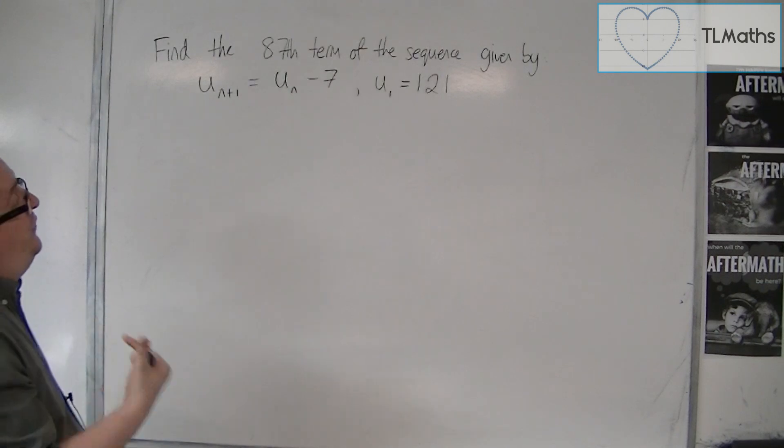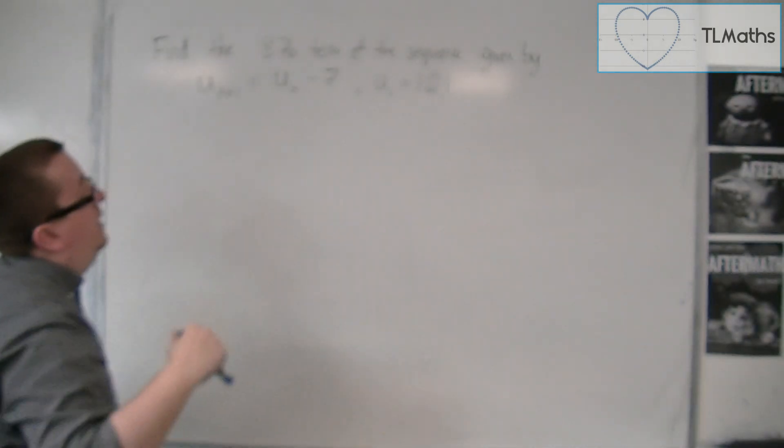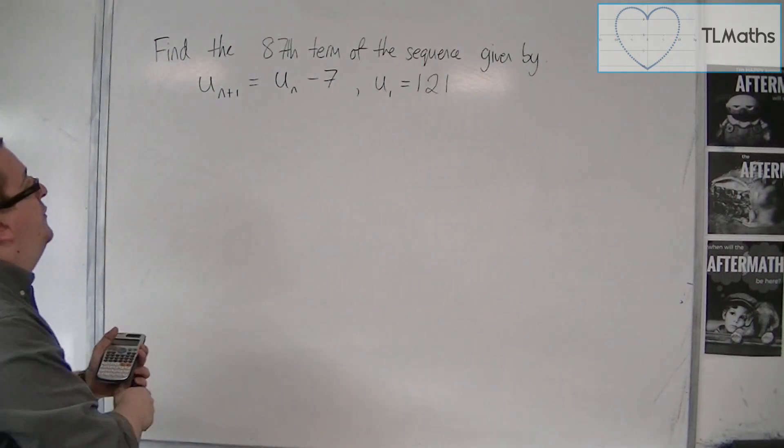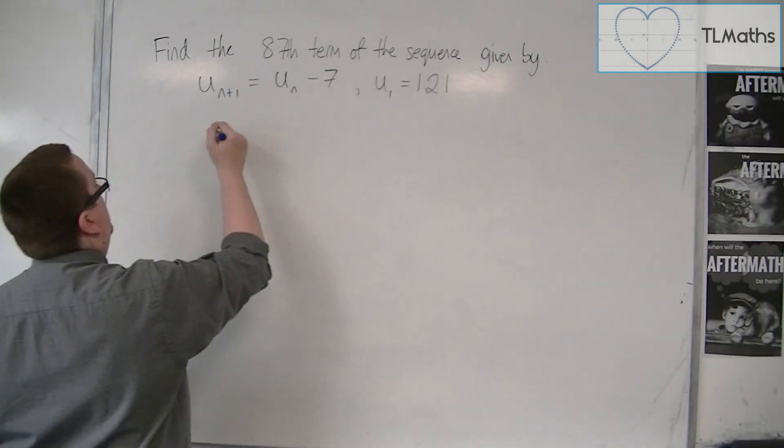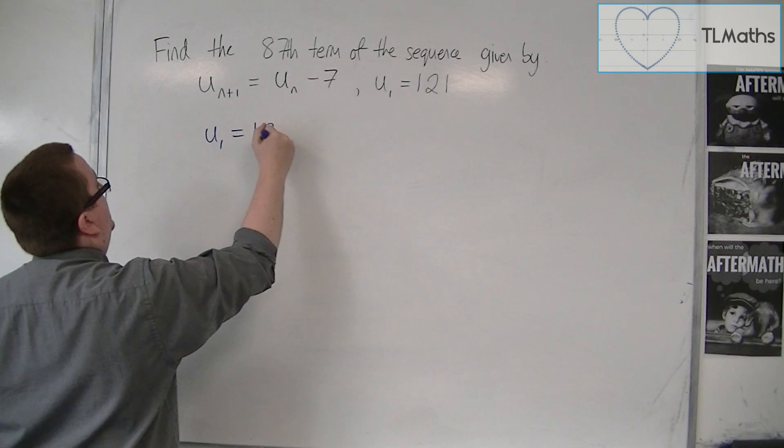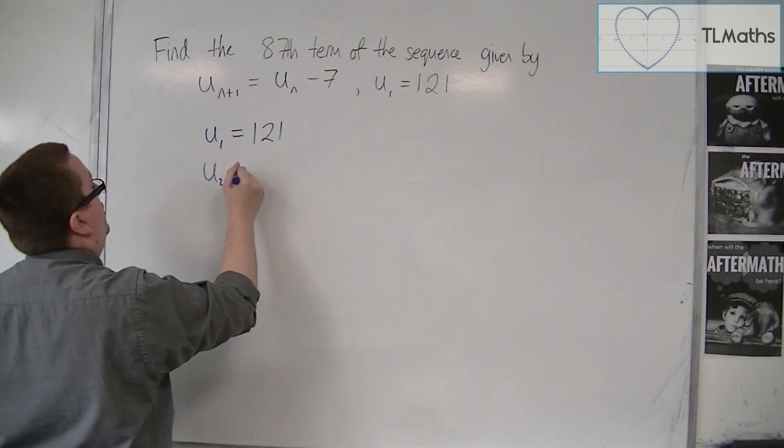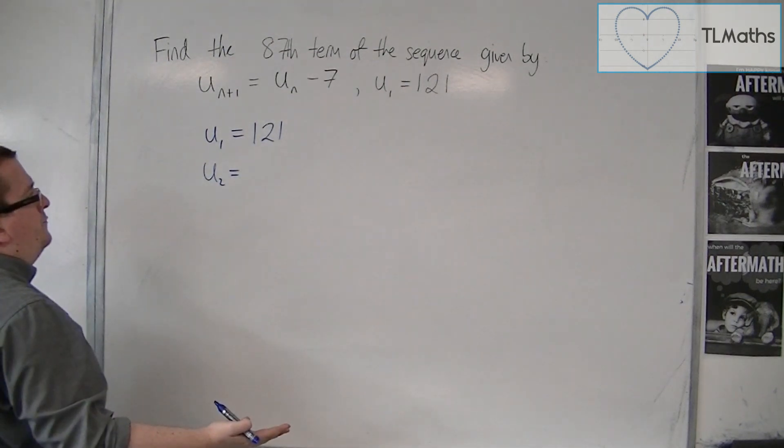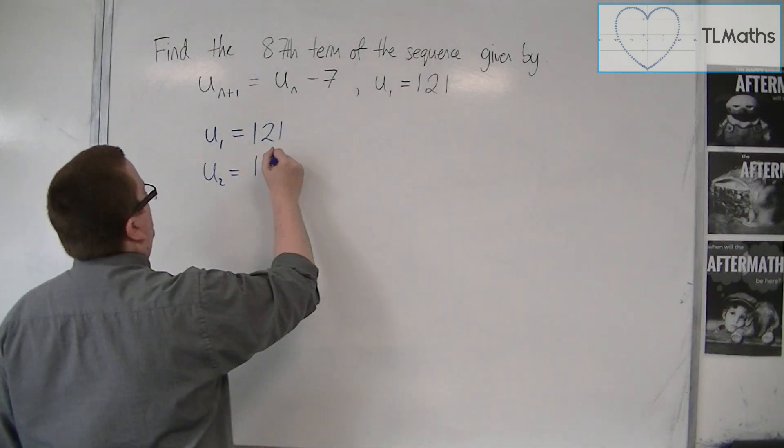But there are some like this that we can now work with. If I start with U_1 is 121, then U_2 is 121 take away 7, and that's 114.